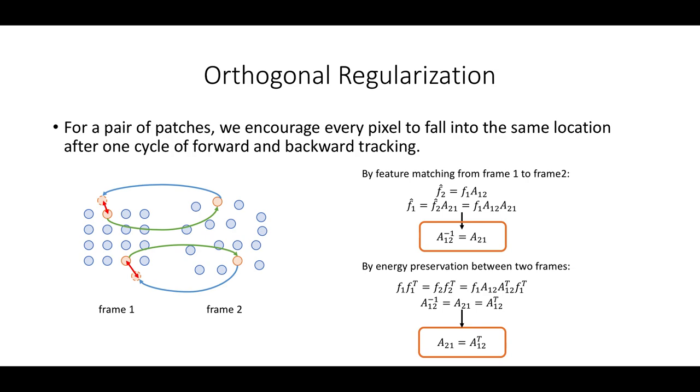This orthogonal constraint satisfies both the cycle consistency and, in addition, the style preservation in videos. For computation, it also saves training time because it avoids computing the affinity matrix twice, as in forward and backward, as shown in the left figure.